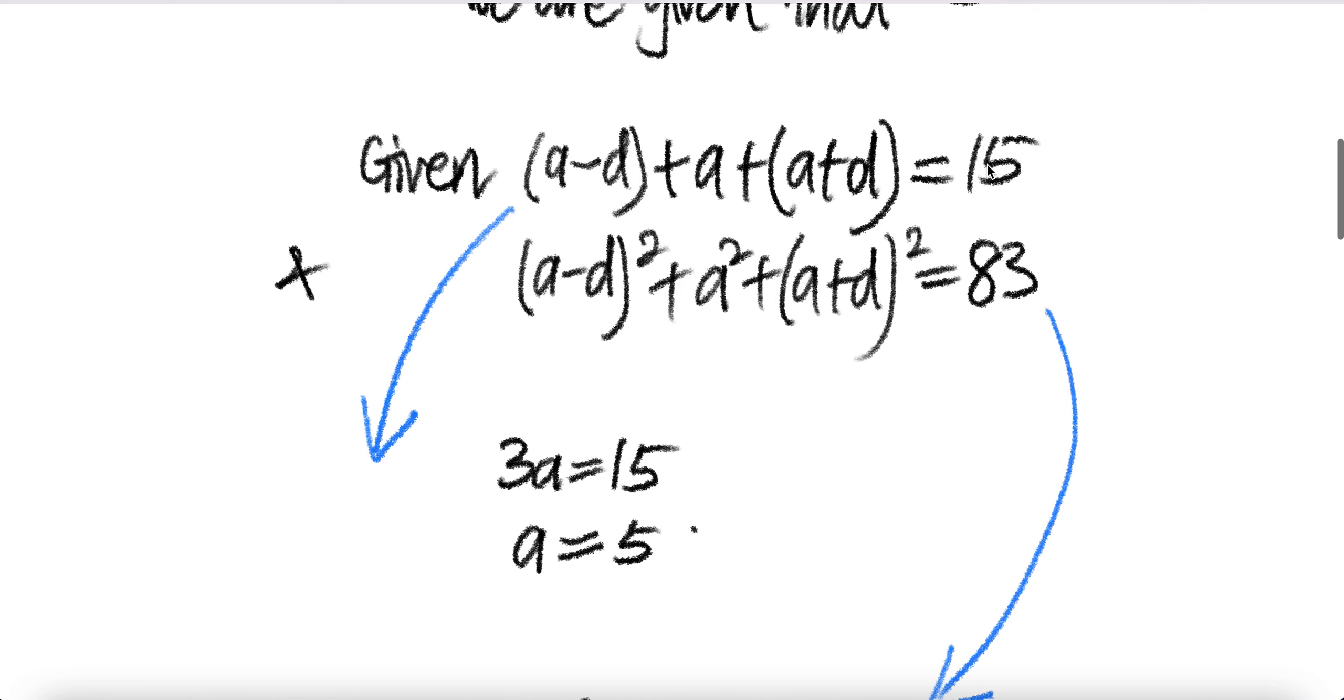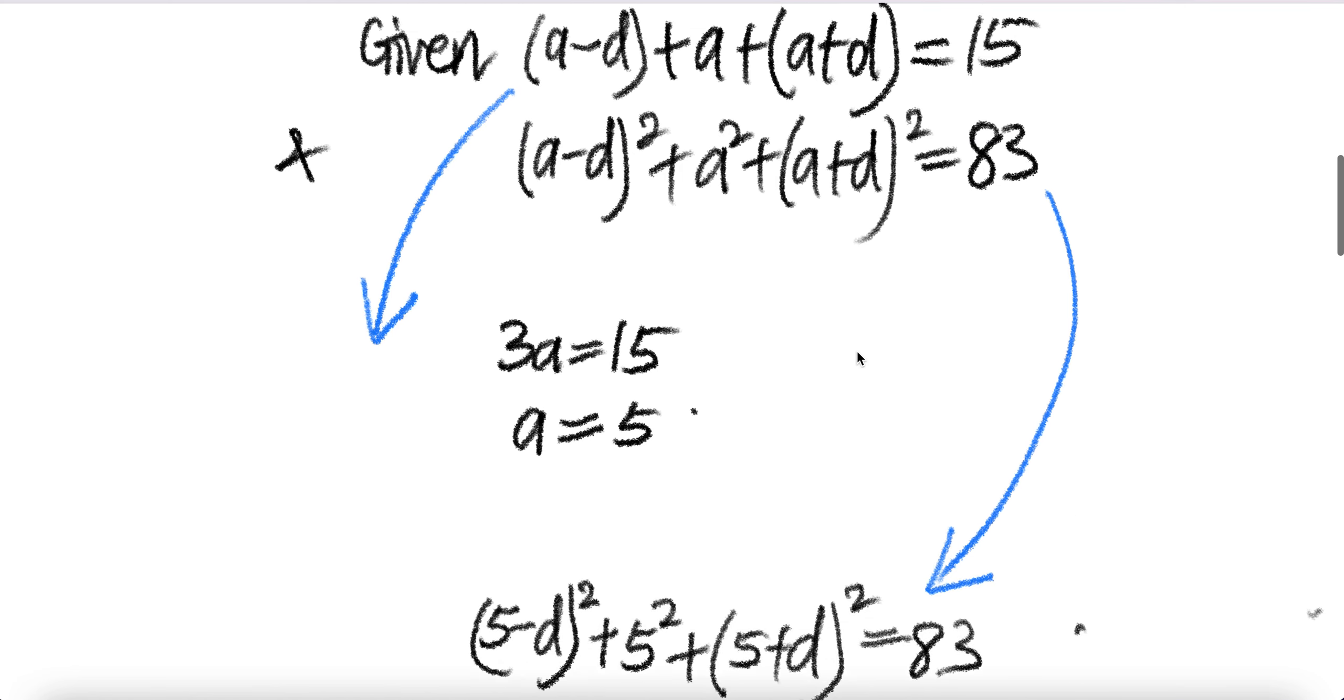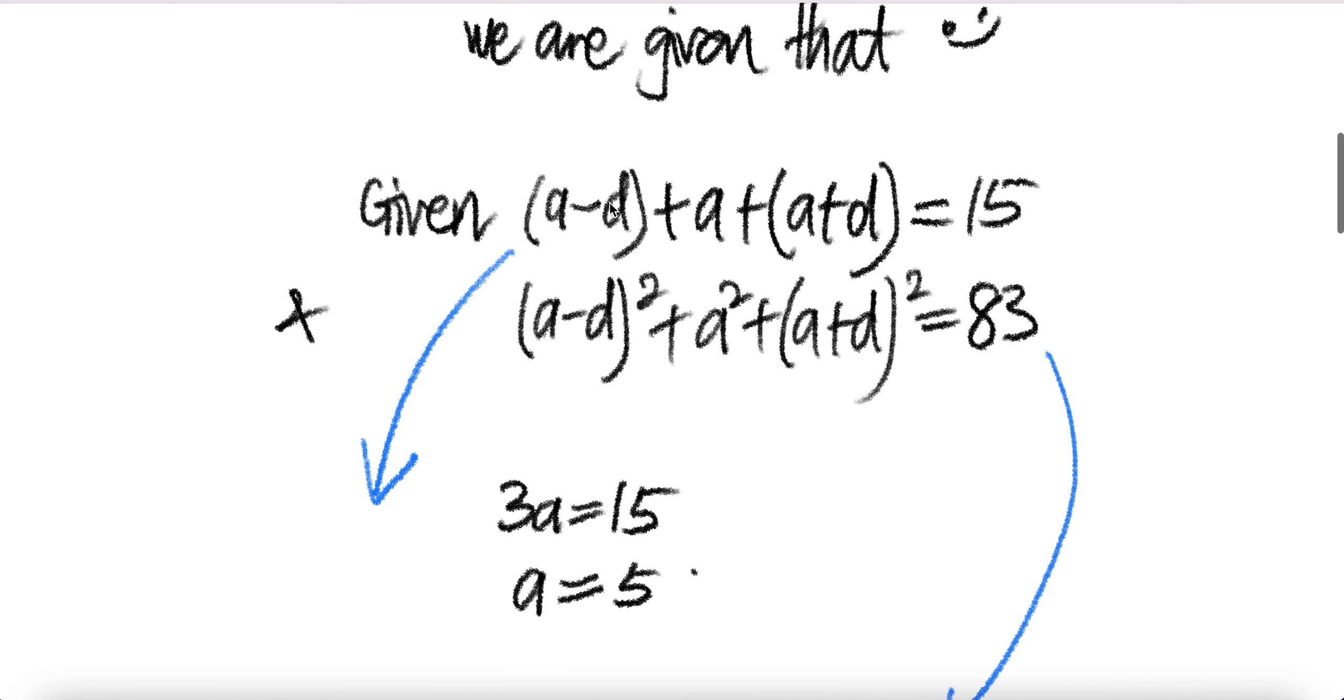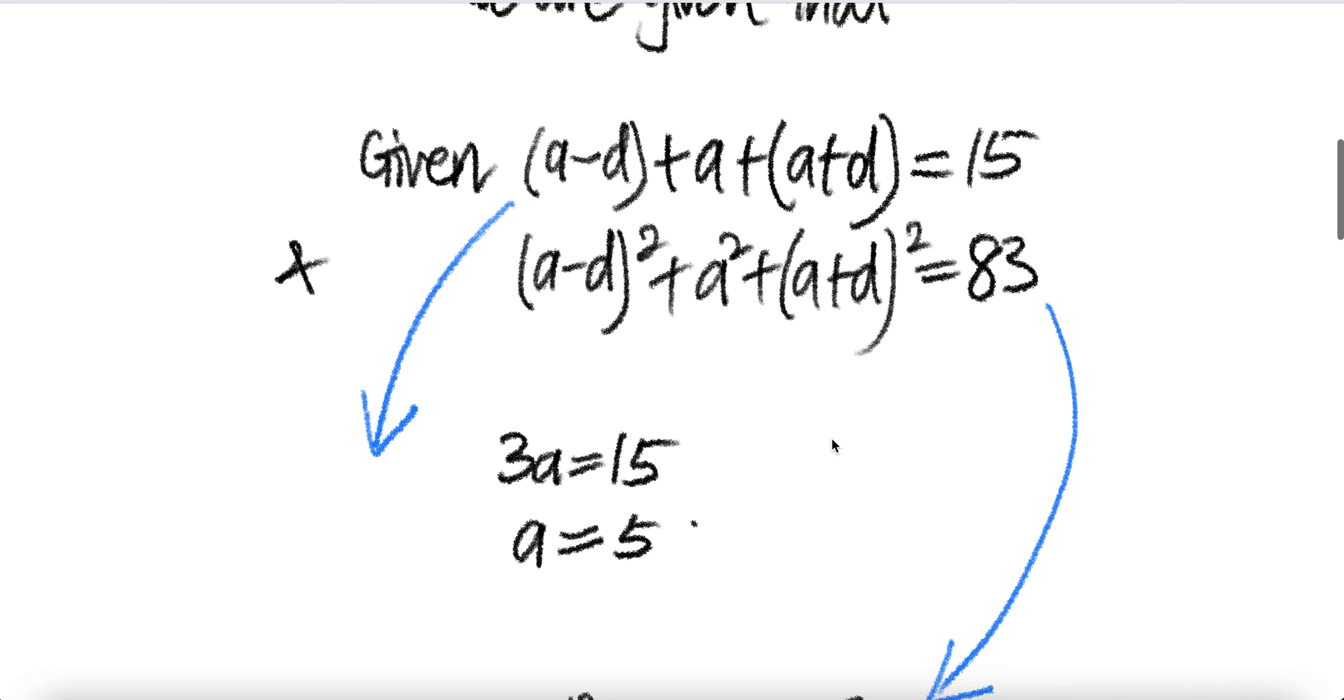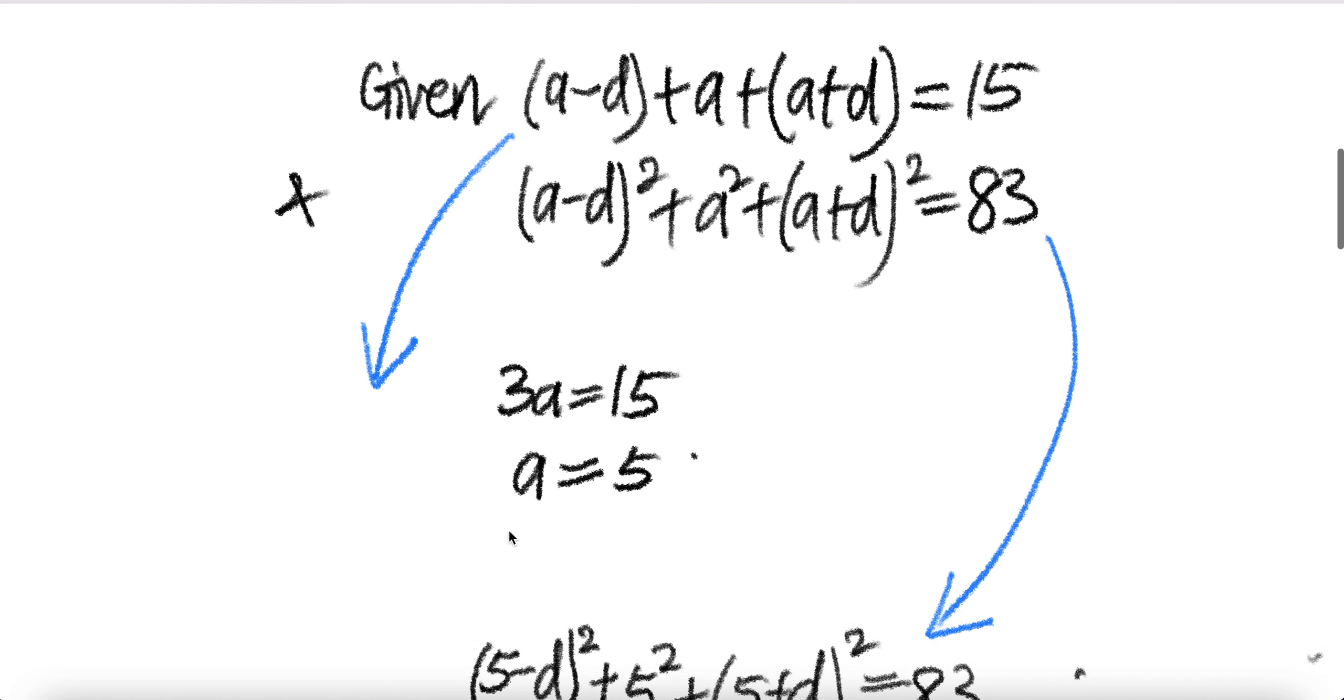Now let's look at the first given knowledge. Notice that minus D and D cancel, you get A, A, A, three A equals 15. Therefore A equals 5. So we are able to know one of the unknowns: A is equal to five.